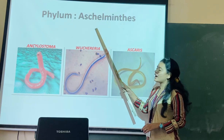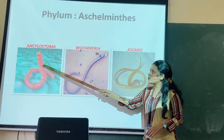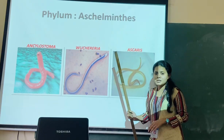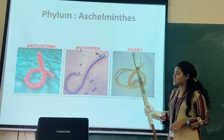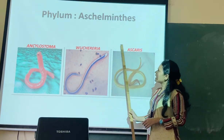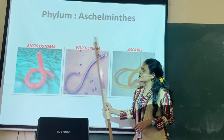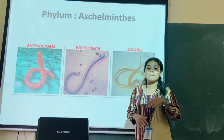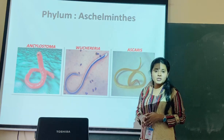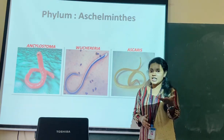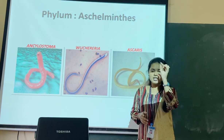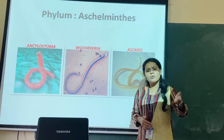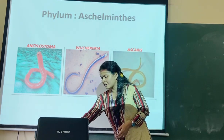Some examples of phylum Aschelminthes include Ascaris. Everyone must be familiar with the term Ascaris - it is a parasitic form. Looking at this name itself, one can easily remember that some of these organisms are parasitic. So when you talk about their habitat, the first thing that comes to mind is that they are parasitic in nature.